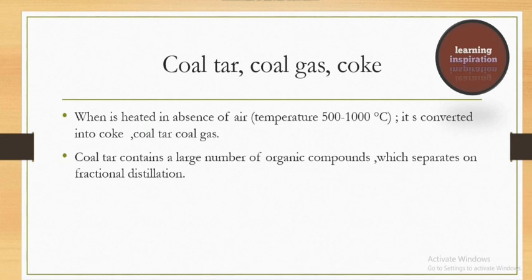May ne aap ko bataya ke coal ke oper jab hum carbonization karayen, or destructive distillation hume uske karayen, to hume kuch organic compounds bhi provide hoate hain. Jo organic compounds hume haasil hoate hain, that is called coal tar, coal gas and coke. Jab bhi aap coal ko absence of air ke anndar, temperature 500 to 1000 Celsius rakho, then it is converted into coke, coal tar or coal gas. Coal tar basically ek organic compound hai jo ke hume haasil hota hai fractional distillation se.